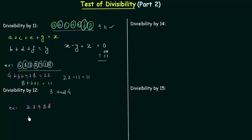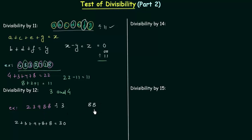The number is 23988. For divisibility by 3 we have to add the digits, and this is equal to 30. 30 is divisible by 3, so this number is divisible by 3. For divisibility by 4 we have to consider the last two digits, which are 88. 88 is divisible by 4, so this number is divisible by 4. As this number is divisible by both 3 and 4, it is divisible by 12 as well.